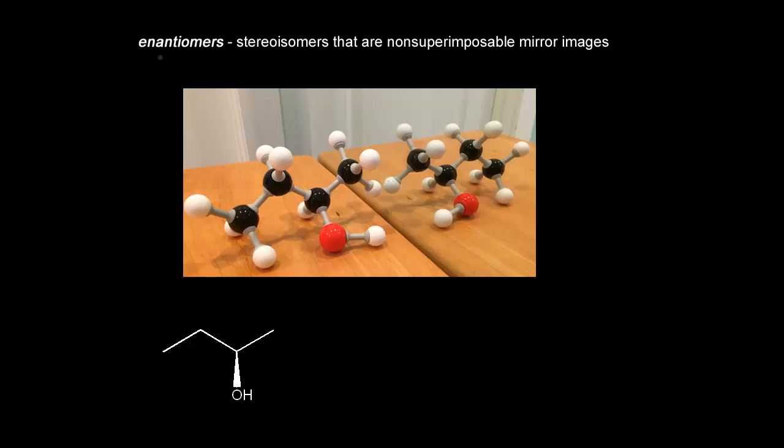We've already seen in an earlier video that enantiomers are stereoisomers that are non-superimposable mirror images of each other.